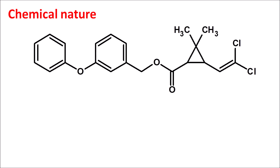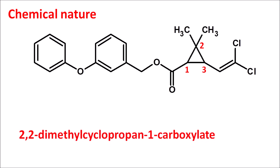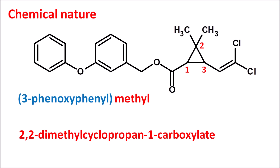We can observe that it has an ester functionality attached with a cyclopropane ring — this is the first, second, and third carbon. It has a 2,2-dimethyl cyclopropane forming an ester, so we write the suffix as 2,2-dimethylcyclopropane-1-carboxylate. It forms an ester with a methyl group attached to two phenyl rings bridged with an oxy group — this is 3-phenoxyphenyl. At the third position it has a vinyl side chain, further attached with two chlorine groups at the terminal — this is 3-(2,2-dichloroethenyl). That is the complete name of permethrin.